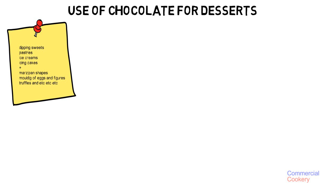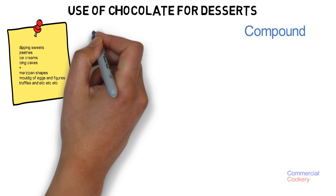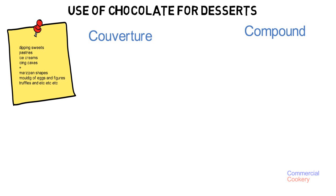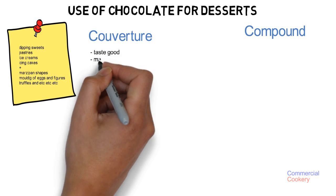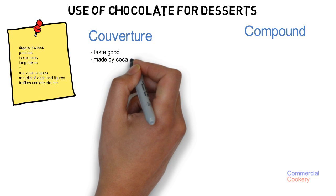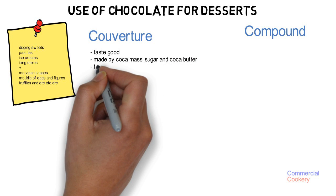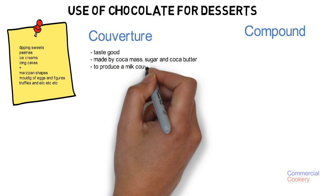There are two types of chocolate. One is compound chocolate, another is couverture. Couverture chocolate is a high-class product — it's smooth and refined. It is manufactured from cocoa mass, sugar, and cocoa butter.